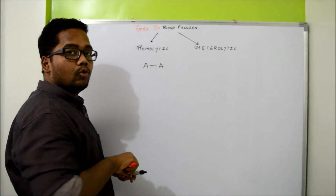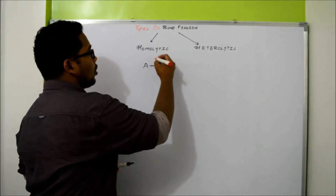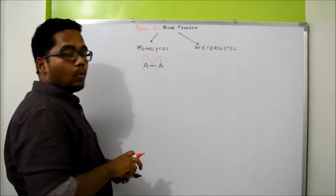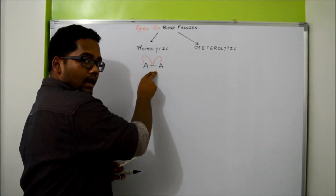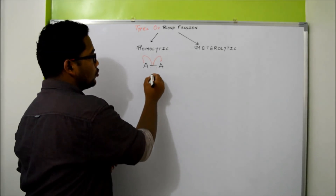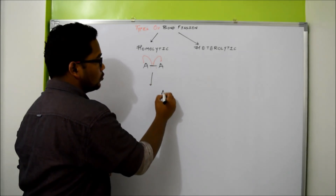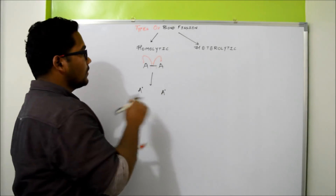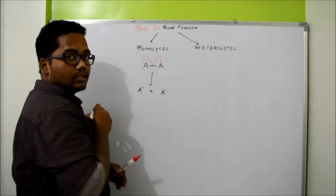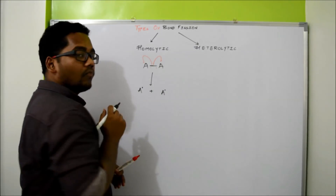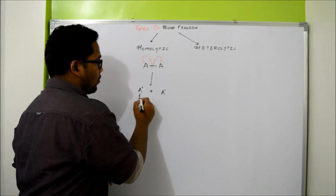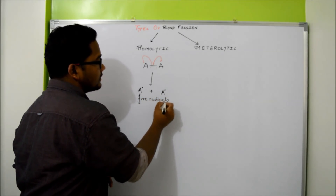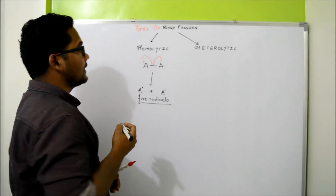In homolytic bond fission, each atom takes its own share of electron and they break the bond. There are two electrons in the covalent bond. When you break this bond, A will take its own share of electron and the other A atom will take its own share of electron, and they will move away from each other. What you form is called free radicals. A dot and A dot are called free radicals.